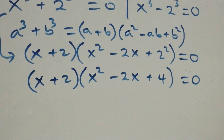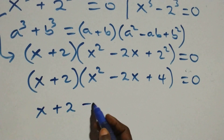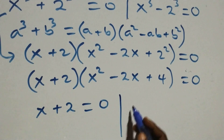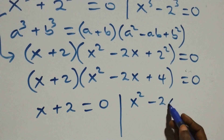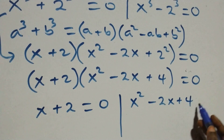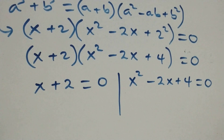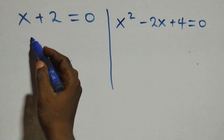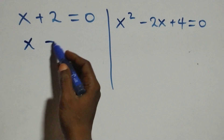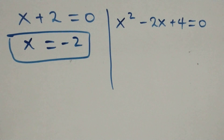This gives two possible sub-cases: x + 2 = 0, or x² - 2x + 4 = 0. From the first, x equals minus 2, which is a real solution.